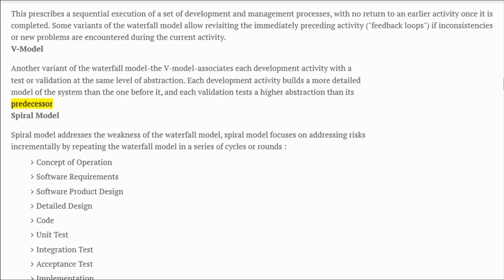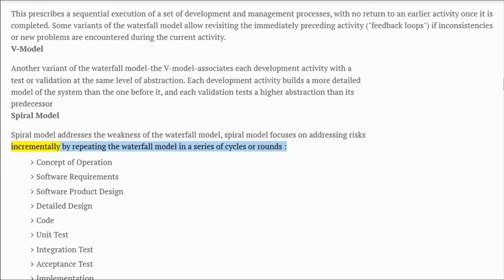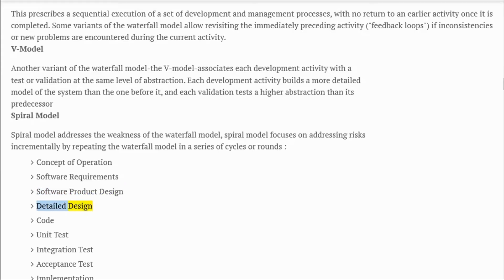Spiral model: addresses the weakness of the waterfall model. The spiral model focuses on addressing risks incrementally by repeating the waterfall model in a series of cycles or rounds. Phases include concept of operation, software requirements, software product design, and detailed design.